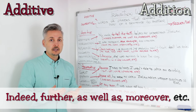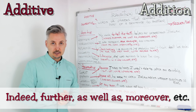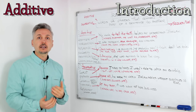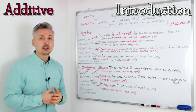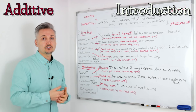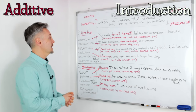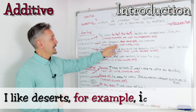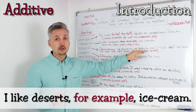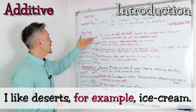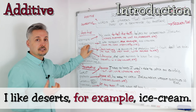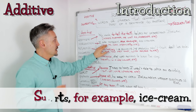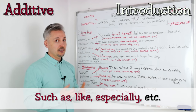They add information to the sentence. The second subgroup is introduction — transition words that give you an introduction to a topic or sentence. For example: 'I like desserts. For example, ice cream.' So 'for example' is the transition word here. You can replace it with 'such as,' 'like,' 'especially,' etc.